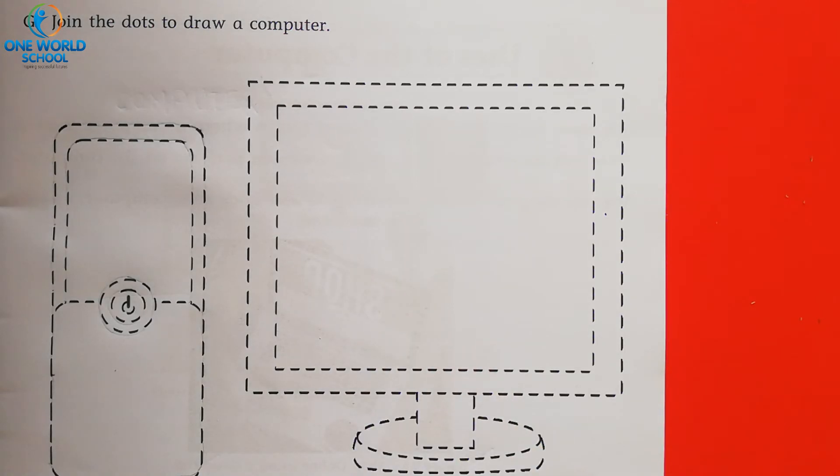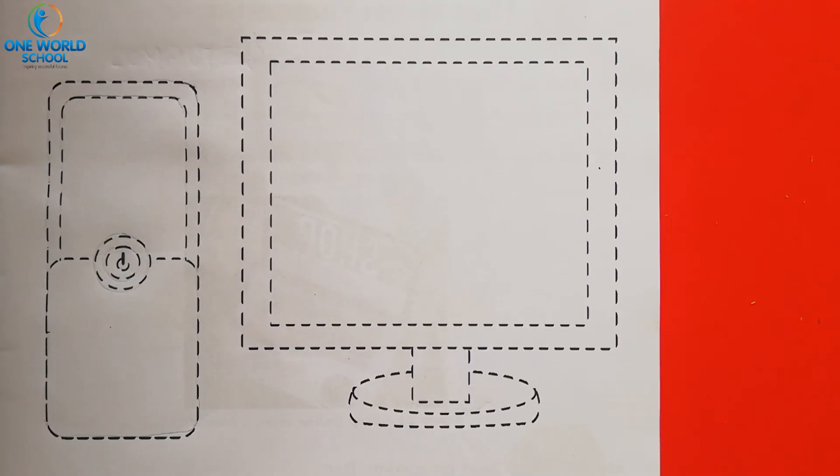Computer के कितने parts होते हैं? Yes. Four parts. And what is that? Number one. Monitor. Number two. CPU. Number three. Mouse. And number four. Keyboard. पर हमारे picture में अभी mouse and keyboard नहीं है. Only two parts है. CPU and monitor. So we have to join the dots of this part.